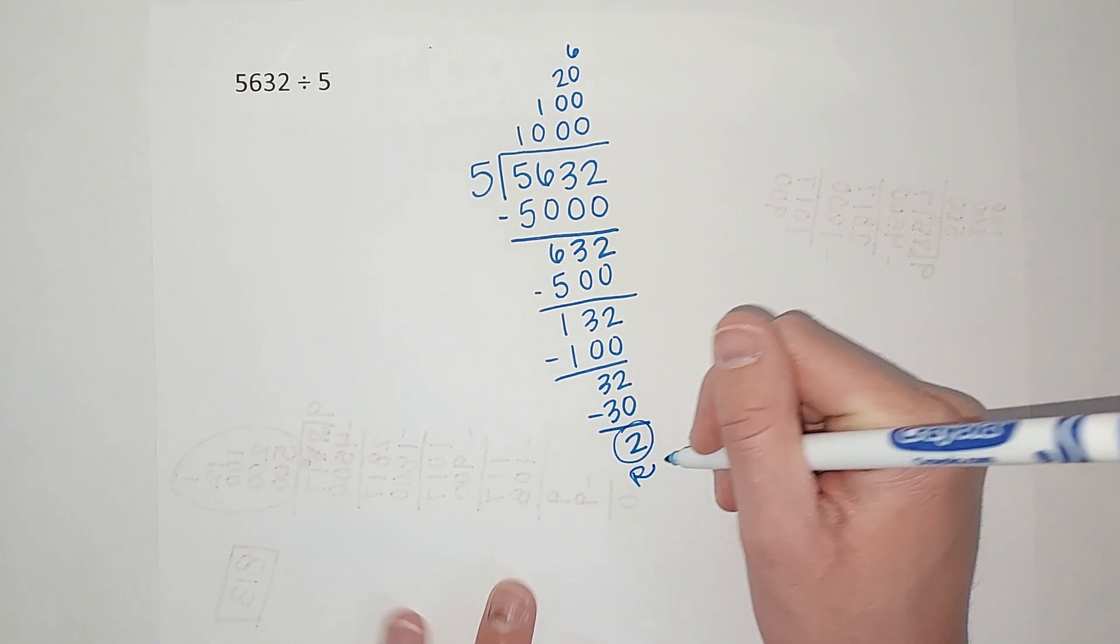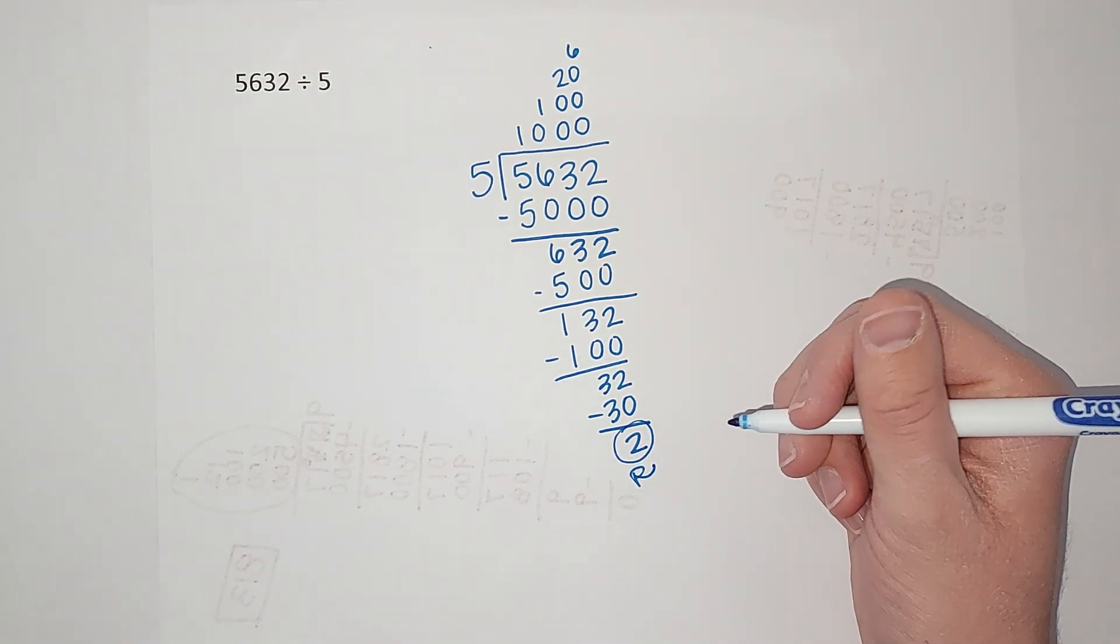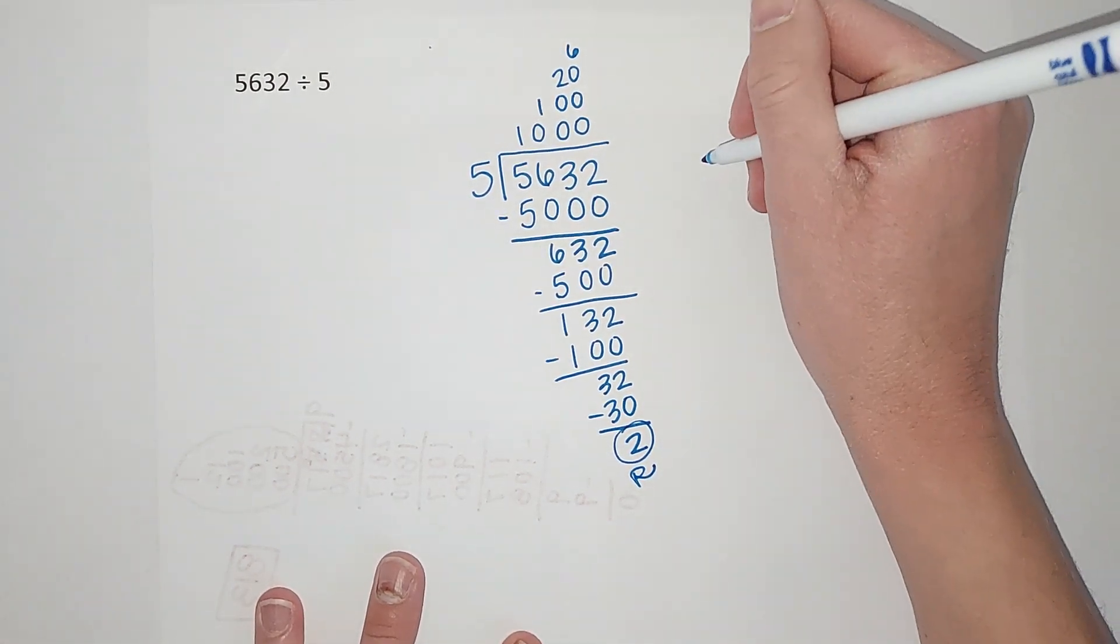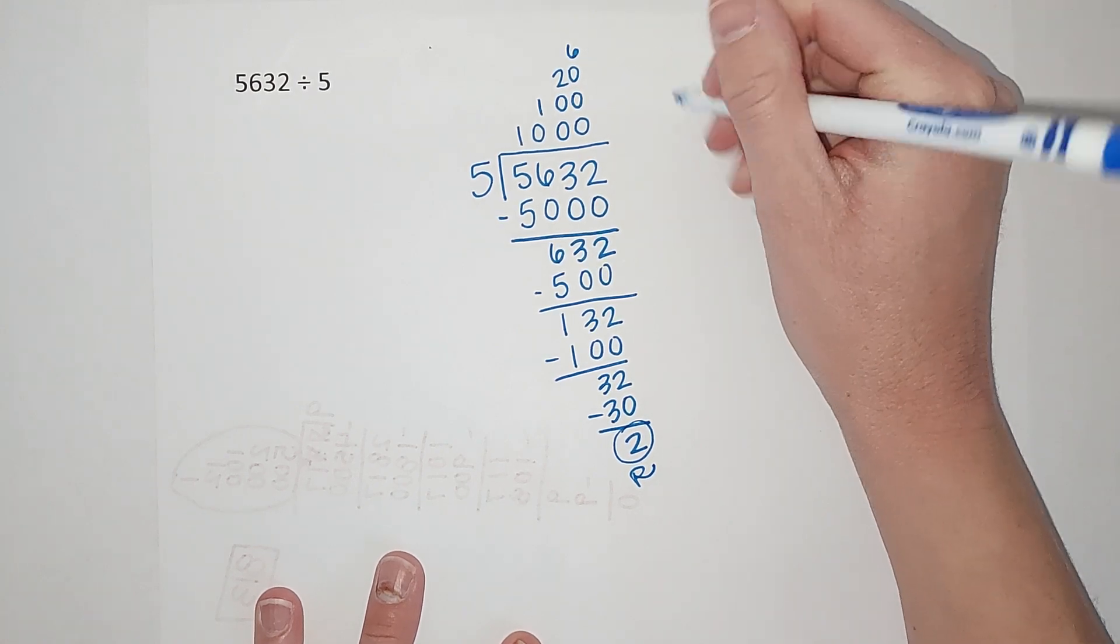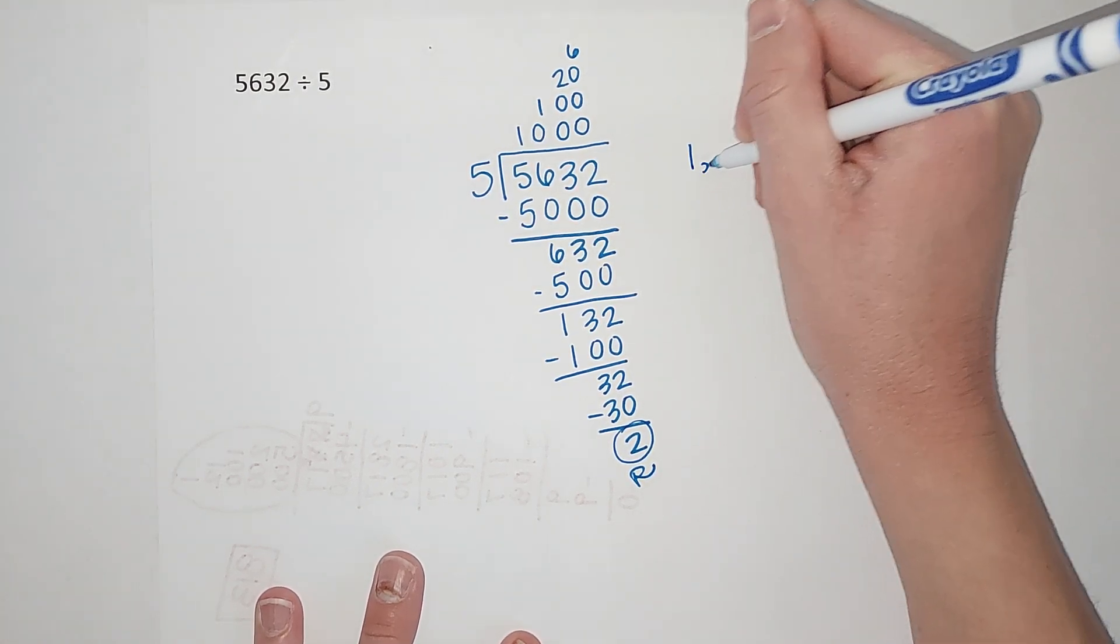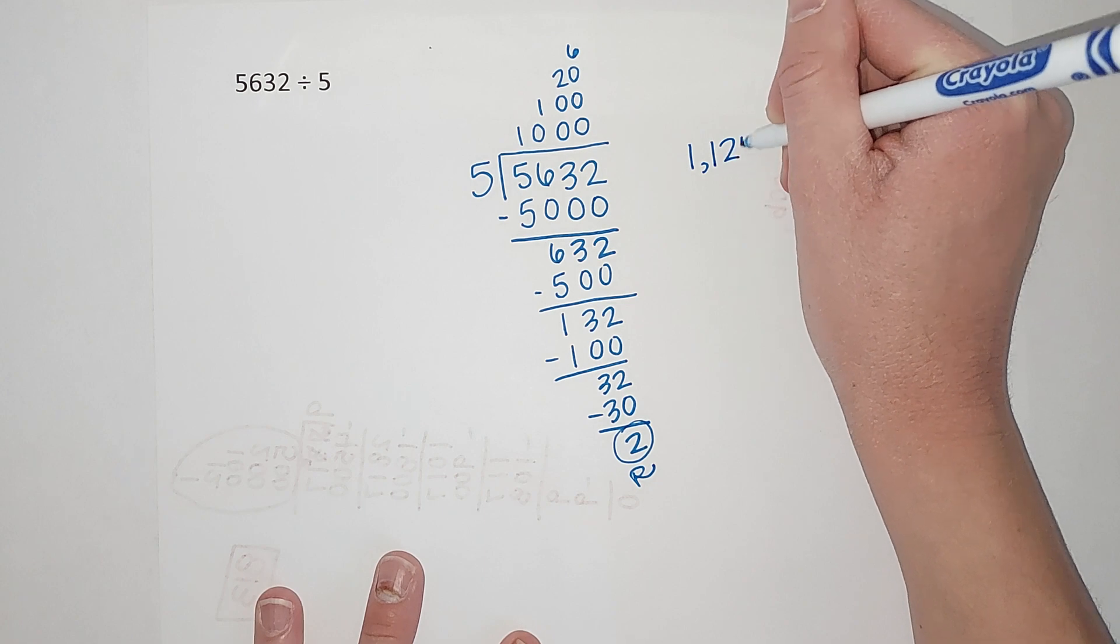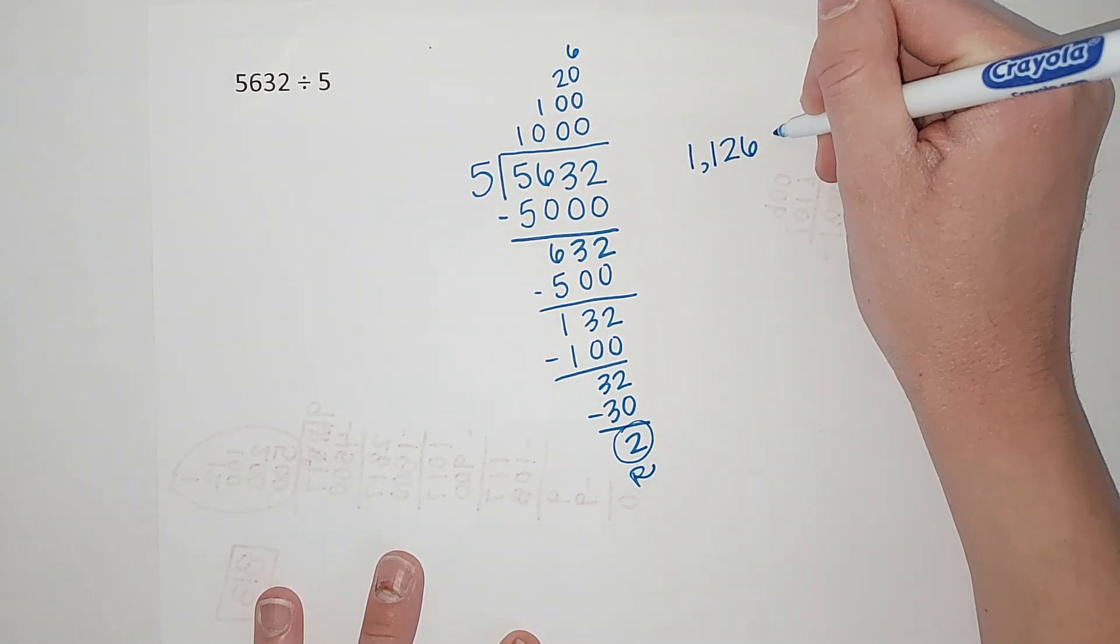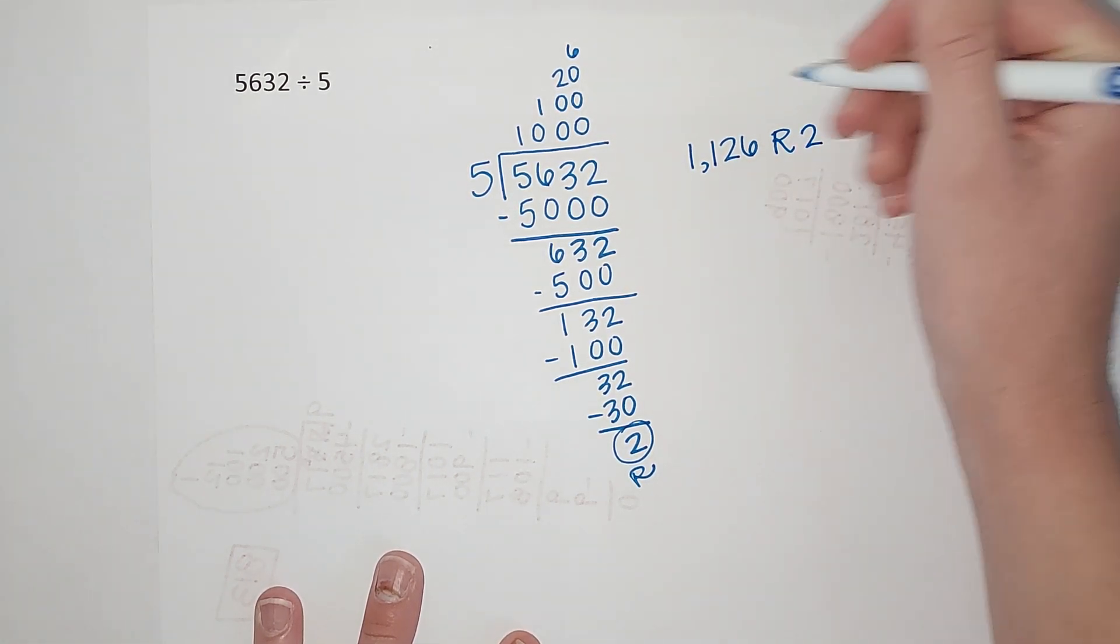Now all I do is I add these top numbers up. So if these are going to add to 1,126, and then I had a remainder of 2.